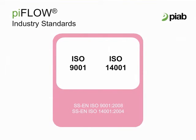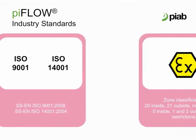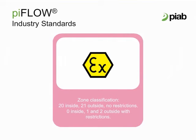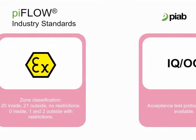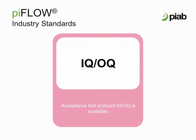PIAB is certified by a third party according to ISO spec 9001 and 14001. The PIFLOW P can extend to gas ATEX certification. IQ and OQ packages are available for the PIFLOW P — IQ is installation qualification and OQ is operational qualification. Typically, this document package is used for pharmaceutical companies.